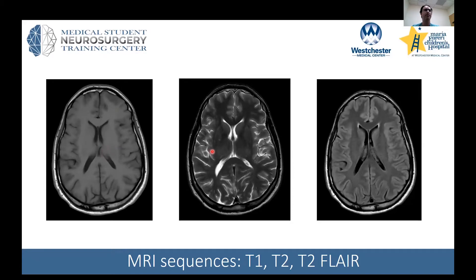On T2, everything is flipped. The fluid is bright, the white matter is dark, and the gray matter is a little bit lighter. T2 is very good for showing pathology. So if you're just starting out in clinic and the chairman says, show me this patient's scan, it's probably better to pull up the T2 first, because that may show you more clearly any kind of pathology.